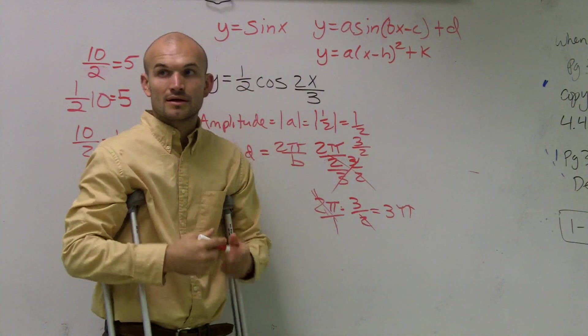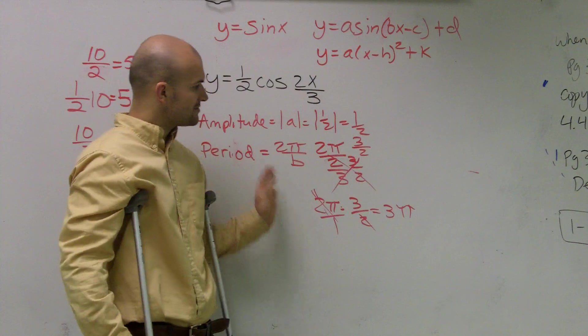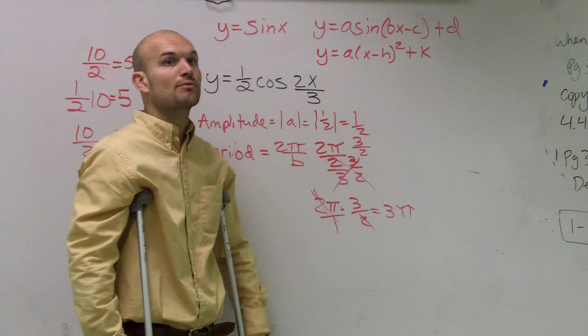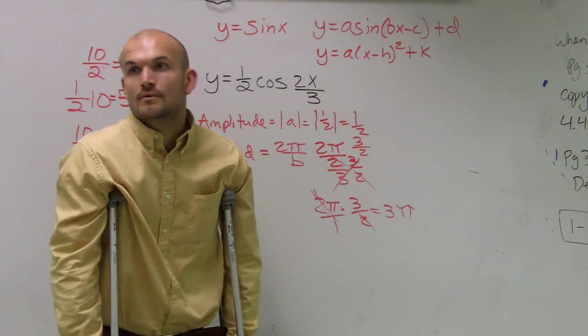That means now, rather than going all the way out to 2π for it to complete a cycle, now my graph is going to go out to 3π to complete a cycle.